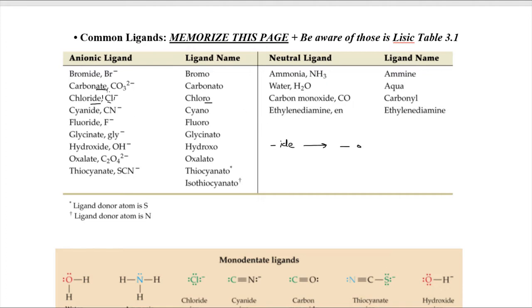The other rule: things with an ATE ending — their ligand name becomes ATO. So carbonate becomes carbonato, glycinate becomes glycinato, oxalate becomes oxalato. Thiocyanate is an interesting case — it's the first example of an ambidentate ligand. Being ambidentate is like being ambidextrous: two atoms have lone pairs and the ligand can bind through either. If it binds through the sulfur, it's called thiocyanato; if it binds through the nitrogen, we call it isothiocyanato — the isomer of the thiocyanato ligand.